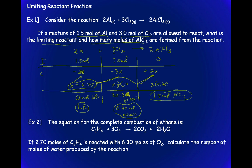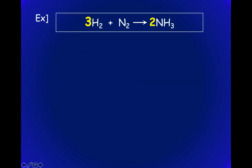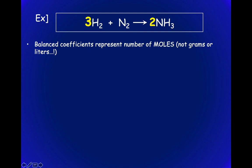Always double-check by going back to see what the question is asking. In this case, how many moles of AlCl₃ form? The answer is 1.5 moles. For example two, which you can try on your own, the answer is 4.2 moles of water produced. Make sure you feed the lowest value of x back in and confirm your answer matches the question.